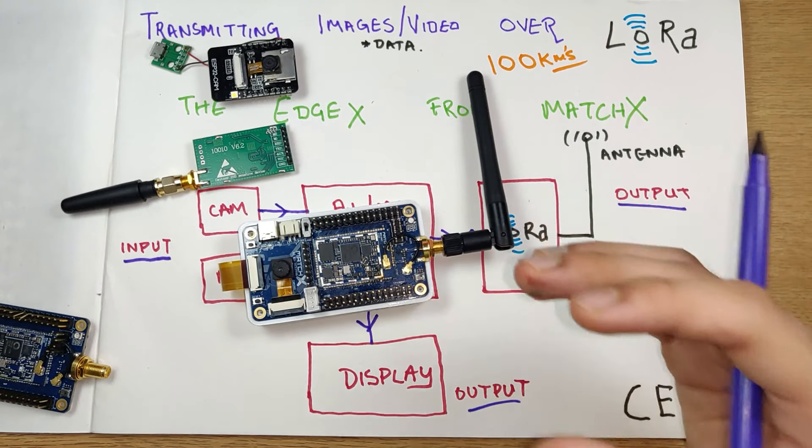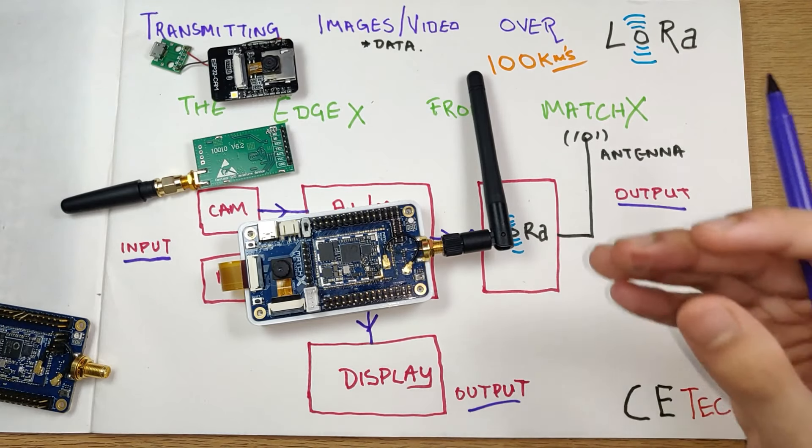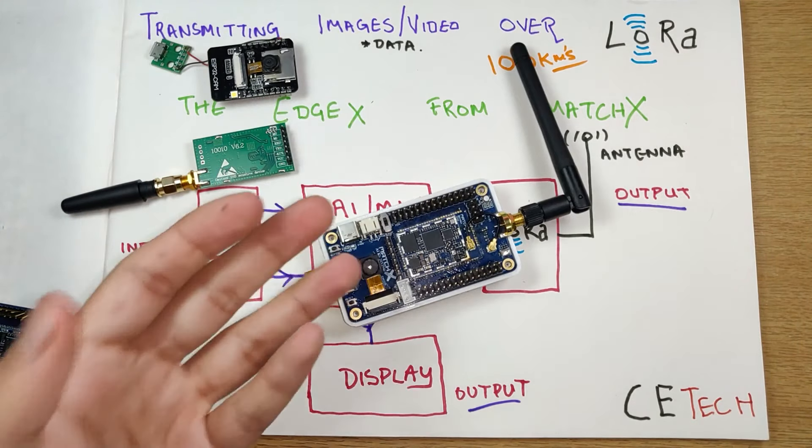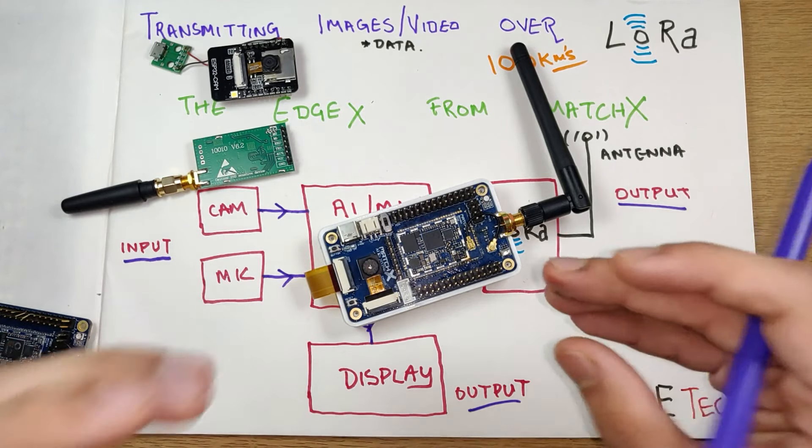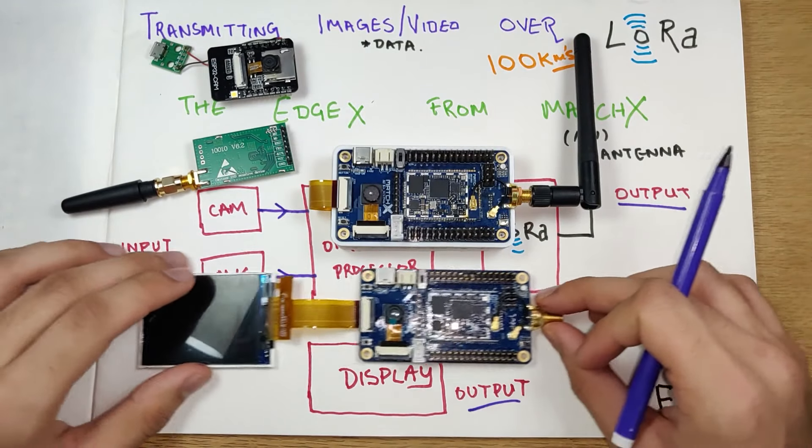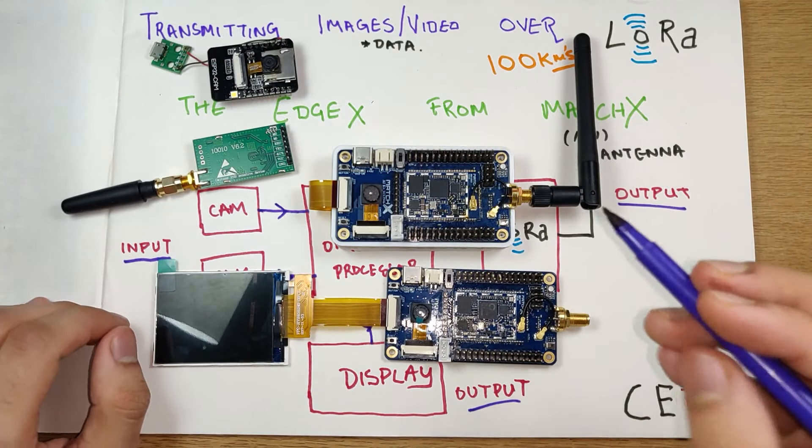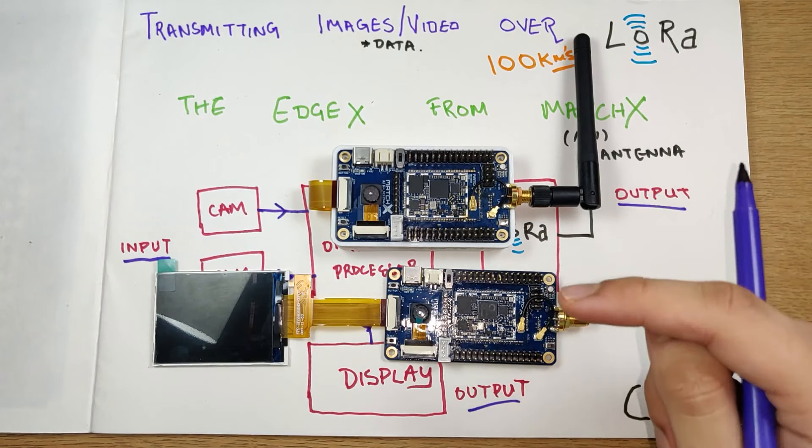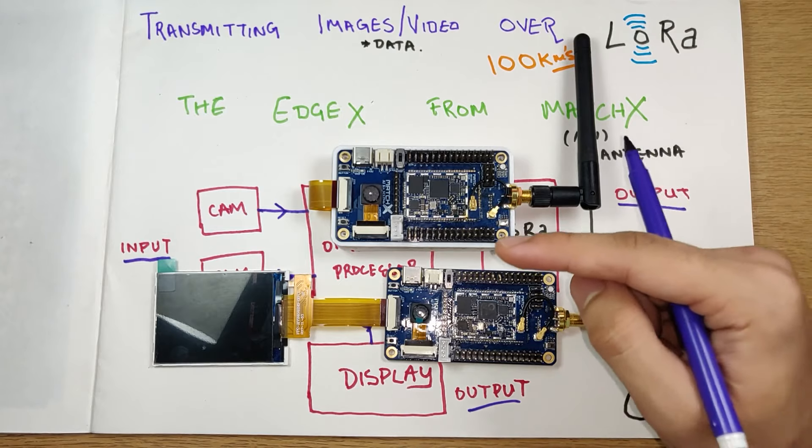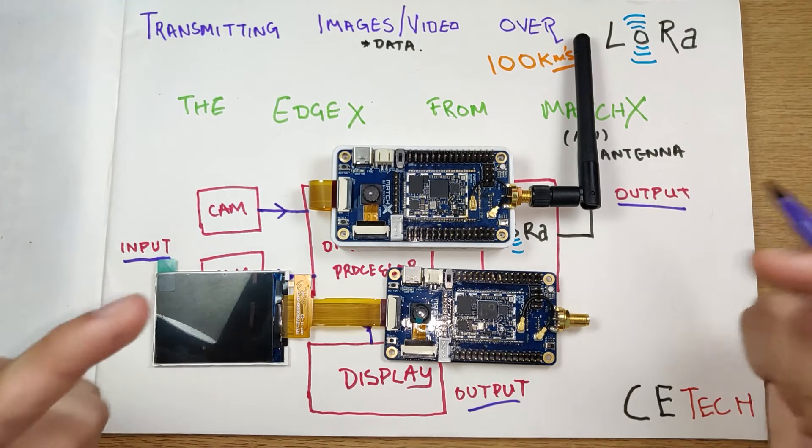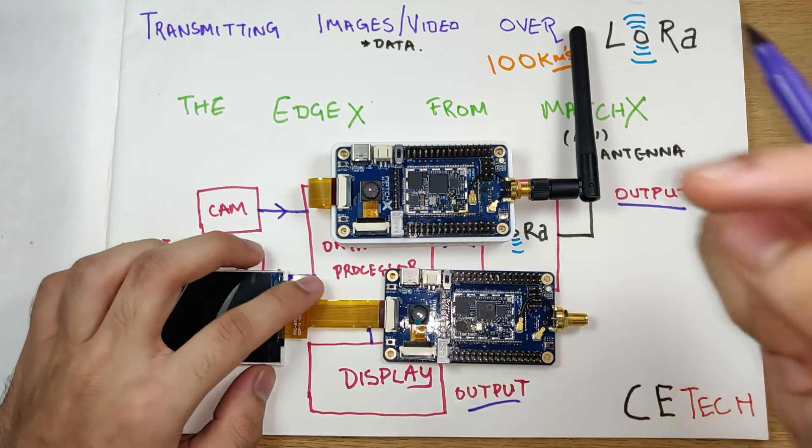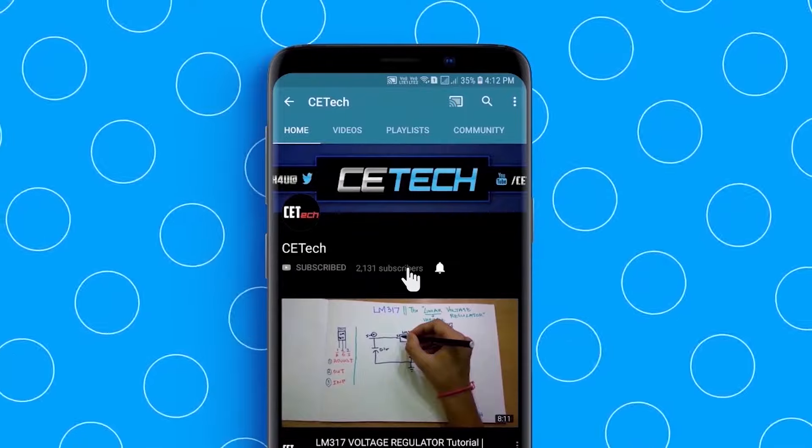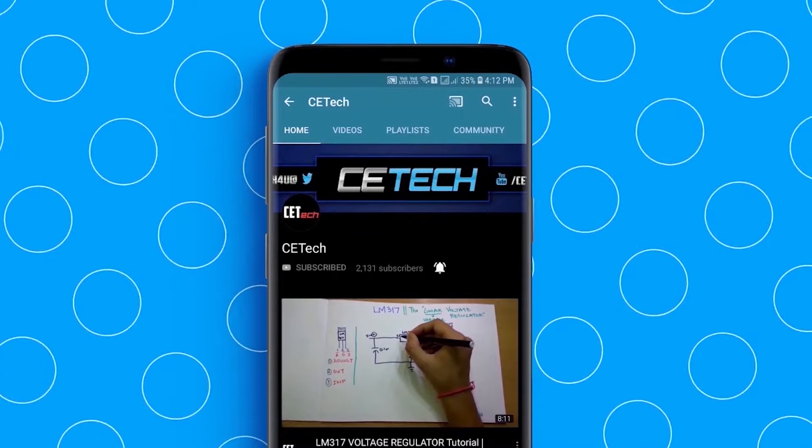Before I knew about this EdgeX, I was trying to make it using LoRa and ESP32. It was challenging because I had to include a Raspberry Pi or Nvidia Jetson Nano for AI and ML processing powers. But this is a much better option because I just need to program it. I don't have to care about the connections - it's already done. This was my first look at the EdgeX from MatchX. Let me know if you're interested in projects using the MatchX. Subscribe to our channel if you haven't, hit the bell icon. This is Akarsh signing off.